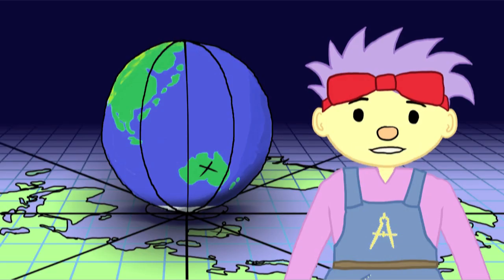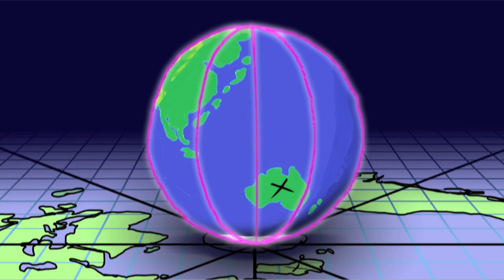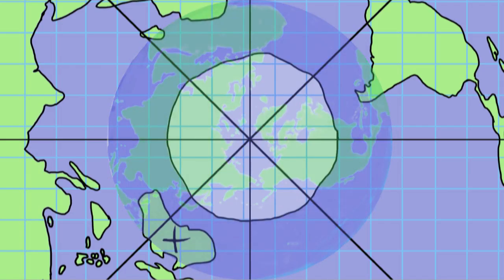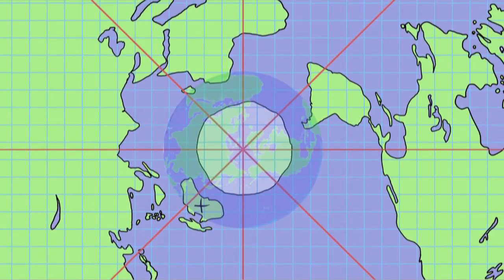Look at these lines of longitude. They start together at the South Pole, spread apart at the equator, and join up at the North Pole. On our map, they start together at the South Pole, but then they spread out toward infinity, never coming back together at all!